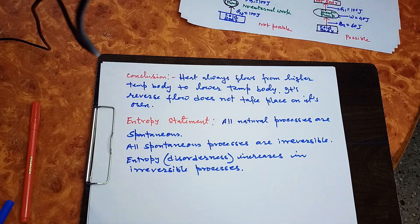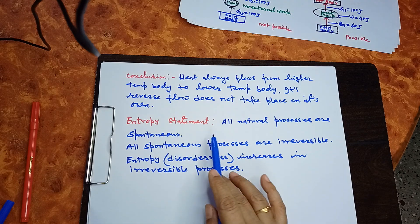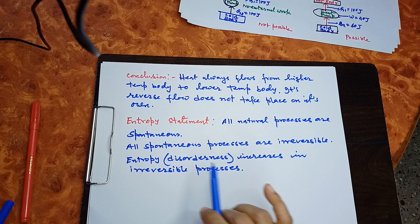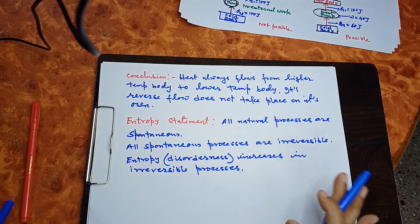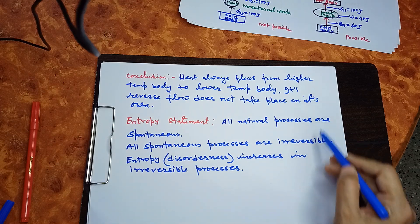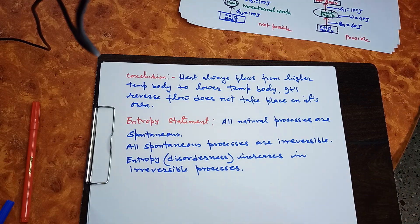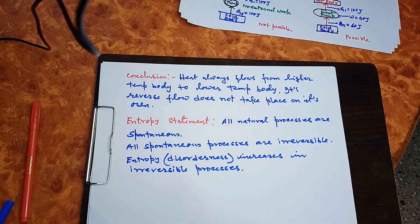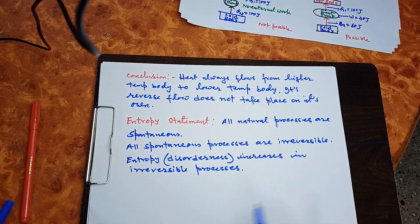Now, the third statement is the entropy statement. All natural processes are spontaneous — they occur without any external aid — and all spontaneous processes are irreversible. These are all statements of the Second Law of Thermodynamics. Irreversible means they cannot be easily reversed, and entropy increases in irreversible processes. Since all natural processes are spontaneous and therefore irreversible, the entropy of the universe is continuously increasing.